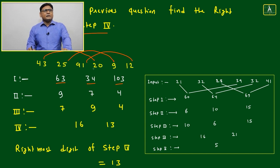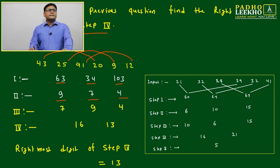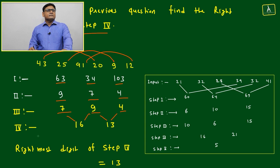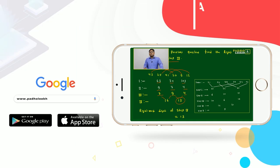43 plus 20 is coming 63, 25 plus 9 is 34, and 91 plus 12 is 103. Now next, sum of digits. Next, we are interchanging. Next, we are adding - step 4. Step 4 only it is asking. Step 4, rightmost digit. Rightmost digit is 13. Only 2 digits are there: 16 and 13. In step 4, always it will be 2 digits. One digit will be right side, one will be left side.